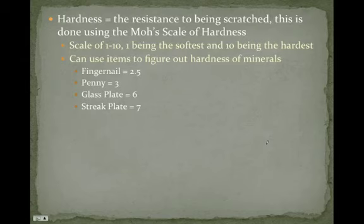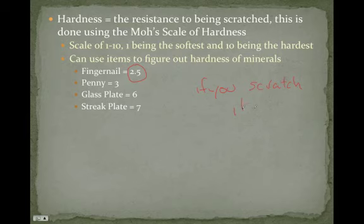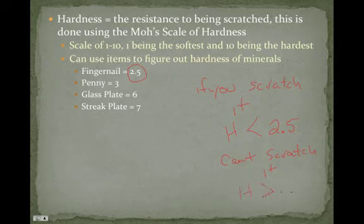Hardness is a very important test because it gives you a very good understanding of what type of mineral you're dealing with. Hardness is the resistance to being scratched, and we use the Mohs scale of hardness — a scale of 1 to 10, with 1 being the softest and 10 being the hardest. A 10 is a diamond; a 1 is talc, which you can break off just by rubbing it. Your fingernail is about a 2.5, so if you can scratch the mineral with your fingernail, it has a hardness less than 2.5; if you can't scratch it, its hardness is greater than 2.5.